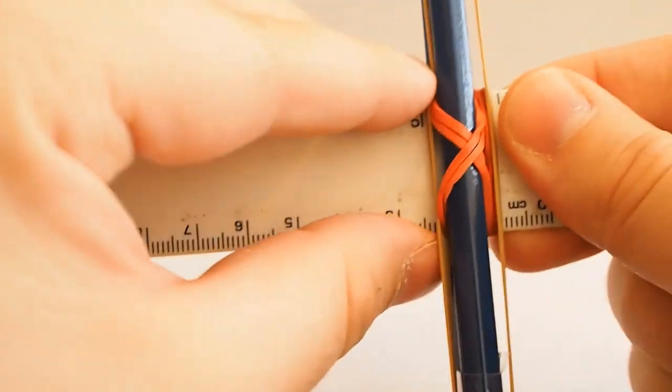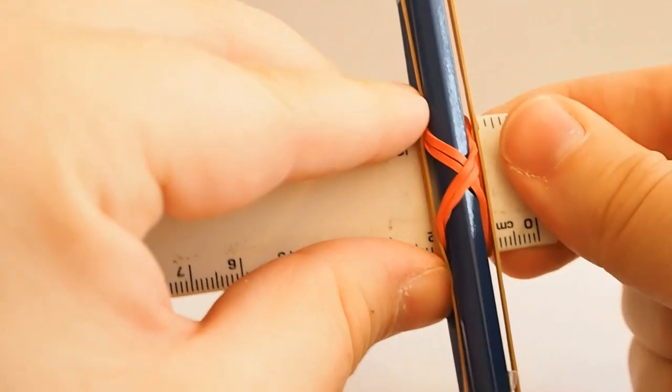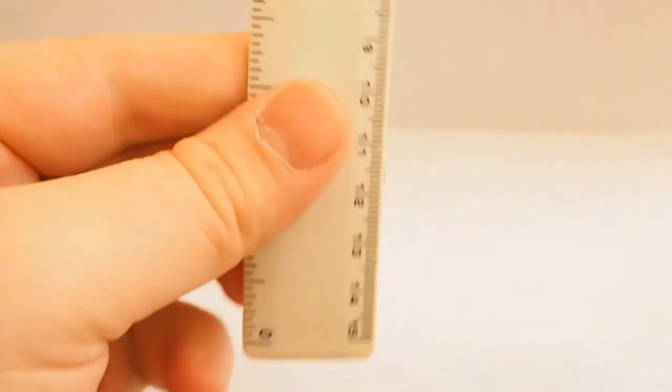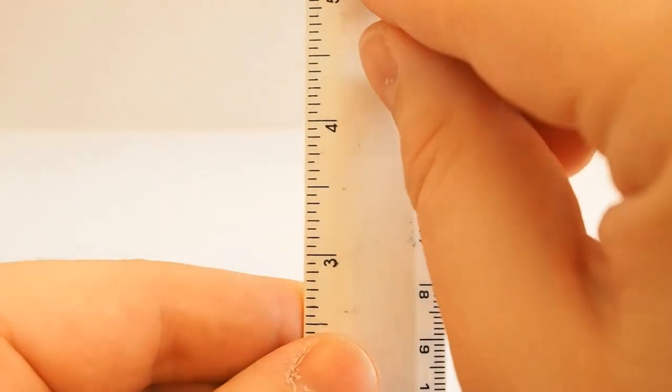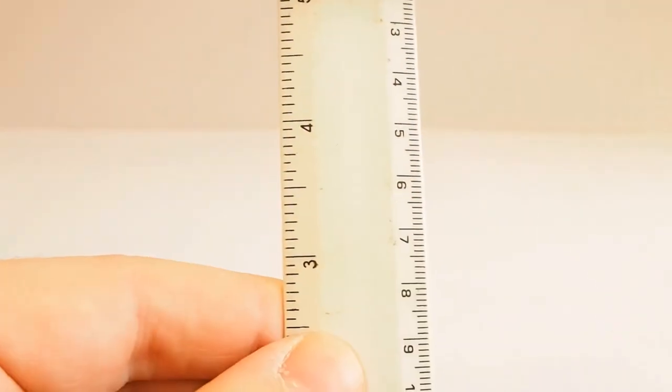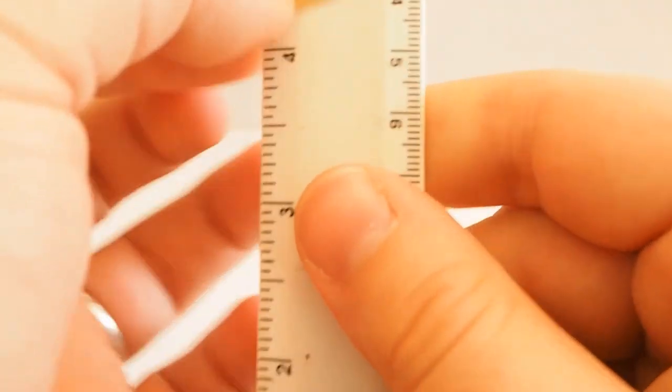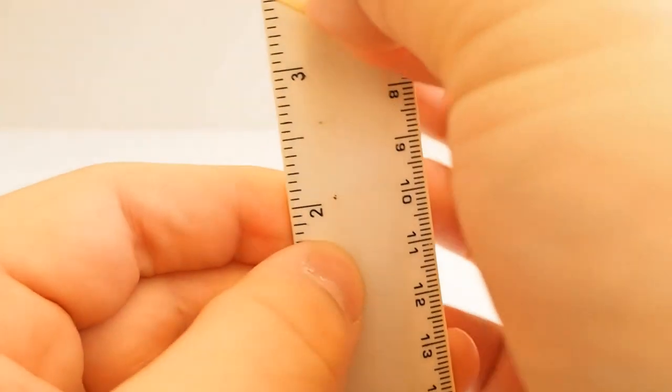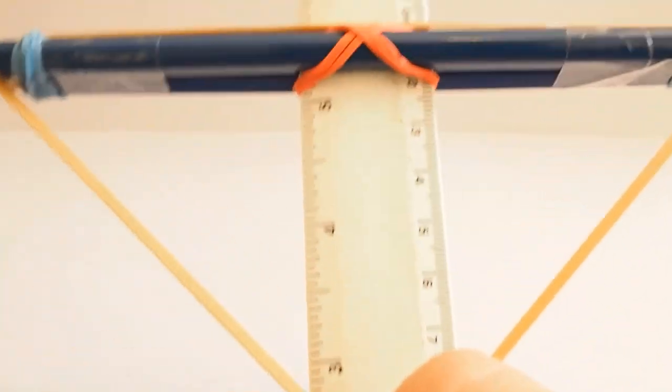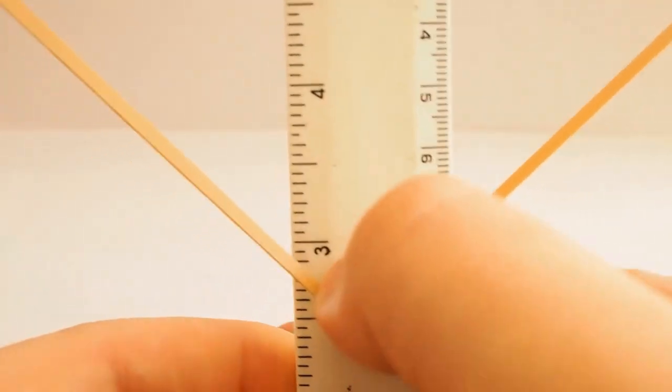The reason I wanted to try and keep it at two centimetres is so it makes my measurements easier. Because what we're going to do is we're going to put this upright. We're going to attach different weights to it and see how far down the ruler it pulls. And this will be our force meter.